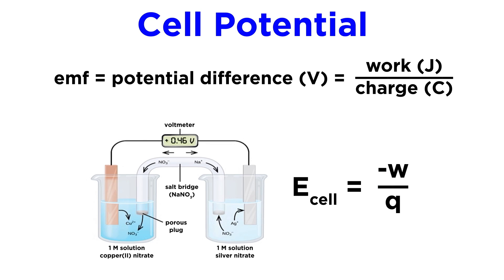Cell potential is related to work and charge by this equation, so we can see that a negative value for work results in a positive cell potential, which is also characteristic of a galvanic cell.